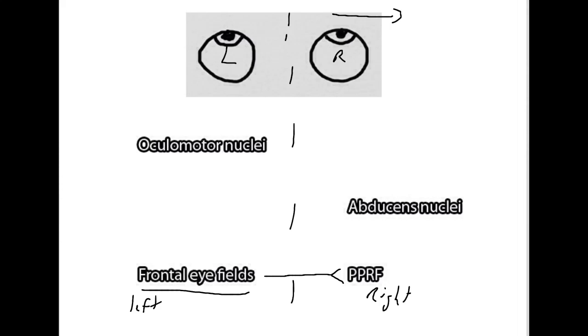This nucleus is going to coordinate the actions of the abducens nuclei and the oculomotor nuclei. So, this is going to connect to the abducens nuclei. And this information is going to now travel via the sixth cranial nerve, or the abducens nerve, to the lateral rectus muscle, which is going to allow the right eye to abduct or look outwards towards the right side.